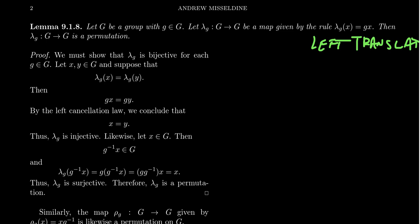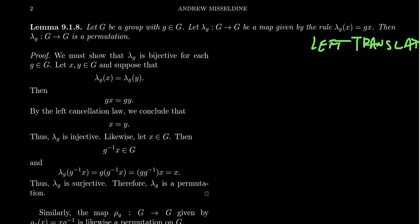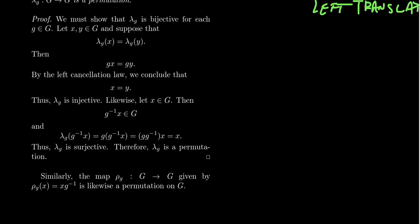We need a separate surjectivity argument so this also applies to infinite groups. Given a target x, who maps onto it? We take g^{-1}x. Notice that λ_g(g^{-1}x) = g·(g^{-1}x) = (gg^{-1})x = x. So this is surjective, and therefore λ_g is a permutation — it's both injective and surjective.